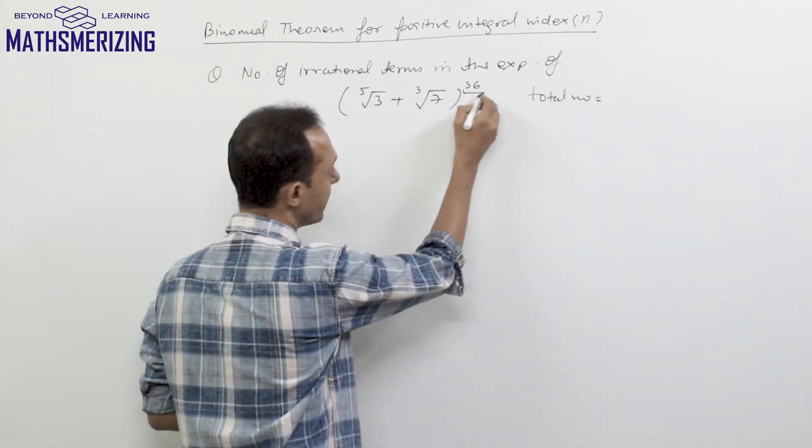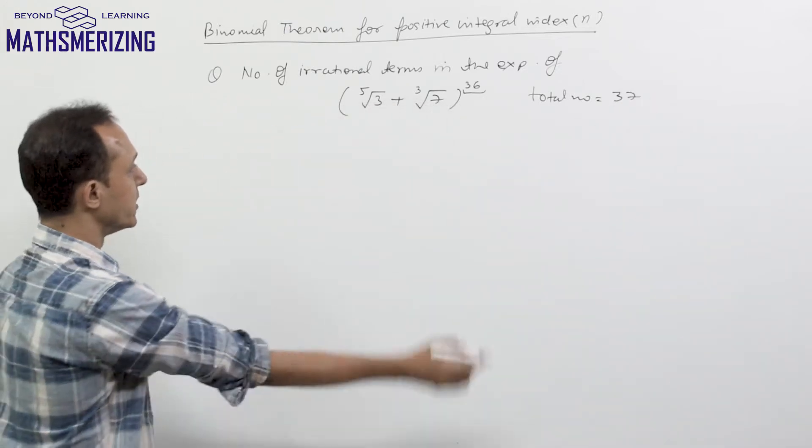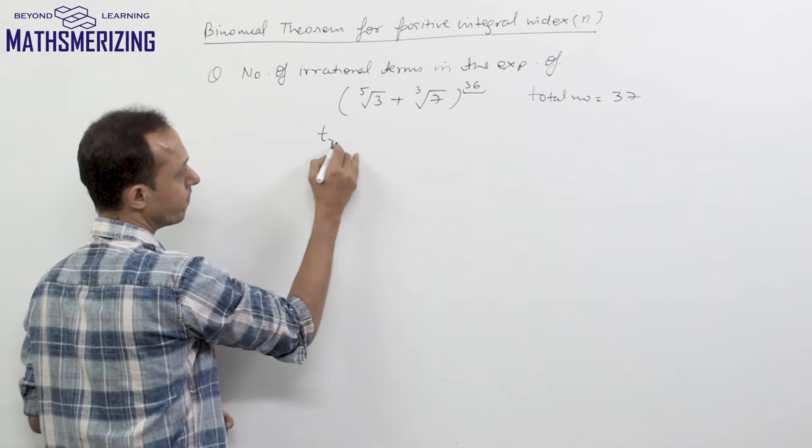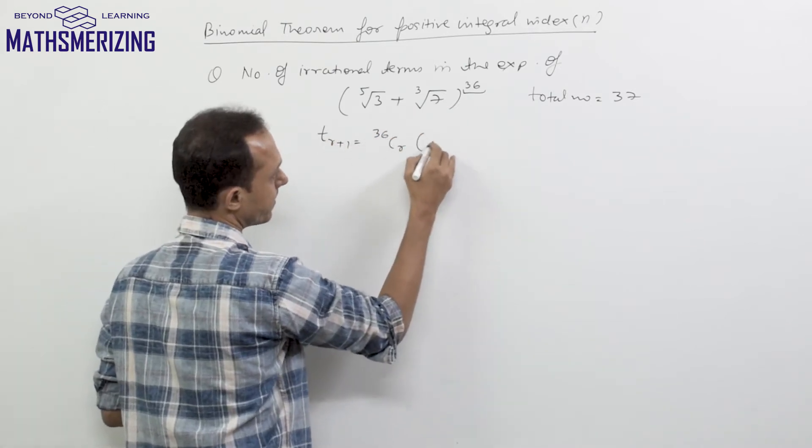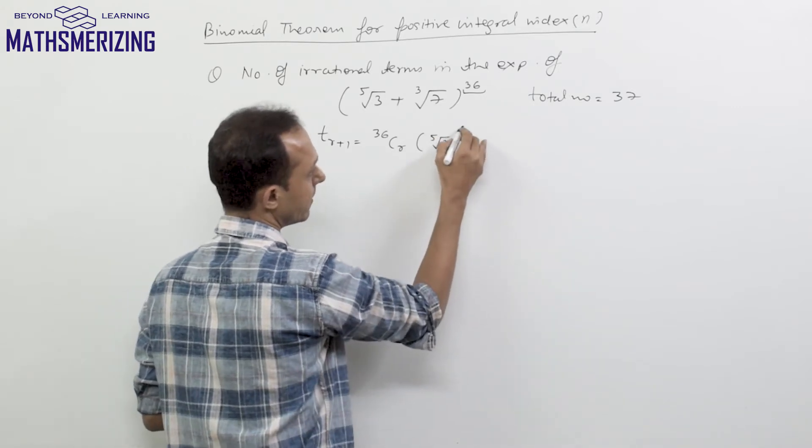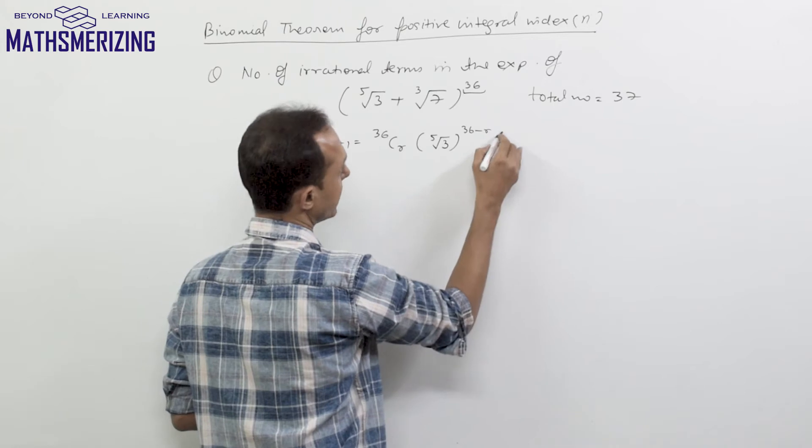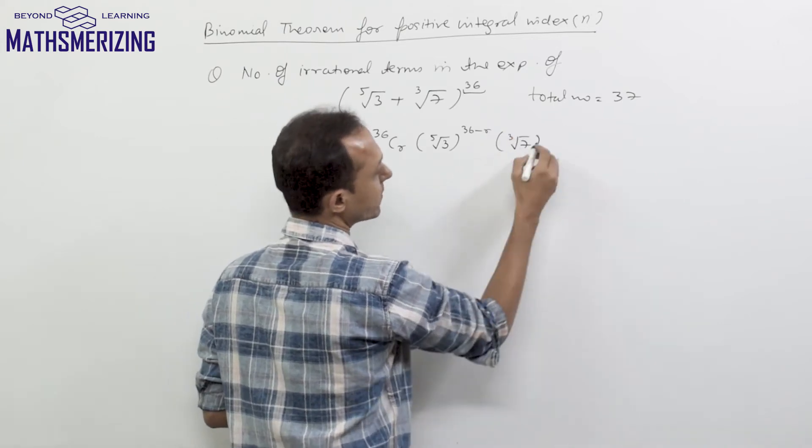it is simply n plus 1 so there will be simply 37. Now again I write its general term so its general term will be 36Cr fifth root of 3 to the power 36 minus r and cube root of 7 to the power r